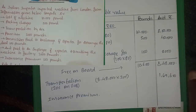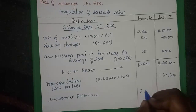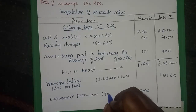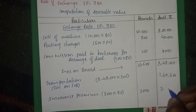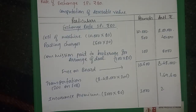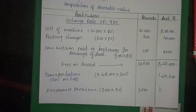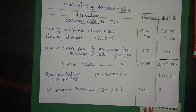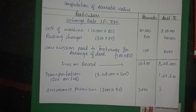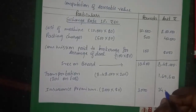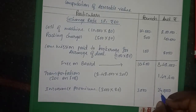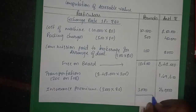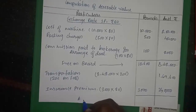Insurance premium: 3,000 pounds. Convert to Indian rupees: 3,000 × 80 = 2,40,000 rupees. This gives the insurance premium amount.